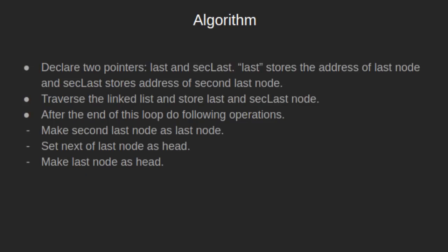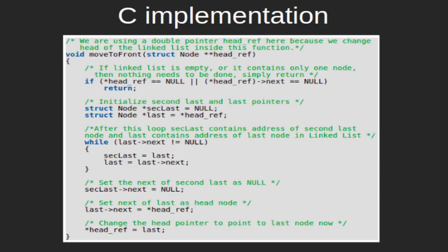Let's see the algorithm for the given problem statement. We declare two pointers, last and sec_last. Last stores the address of the last node and sec_last stores the address of the second last node. We traverse the linked list to store the last and second last nodes. After the traversal, we perform three operations: we make the second last node the new last node, set the next of the last node to head, and make the last node the new head.